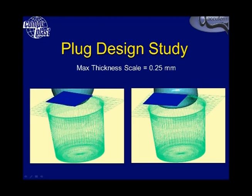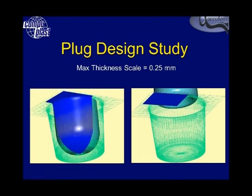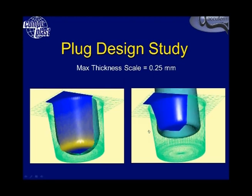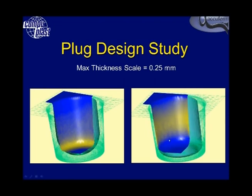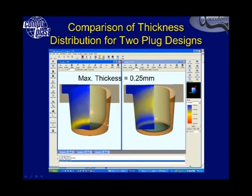This is an example of a plug design study. We have two plugs: one has a rounded base and the other has a concave base. The simulation results for the rounded base are scaled to a maximum of 0.25 mm — anything blue is 0.25 mm or higher. With the rounded base, the minimum thickness area is down in this bottom section. When we use the concave plug, the minimum thickness moves to the wall rather than the bottom. Depending on the plug design, we can achieve very different thickness distributions in the final part.